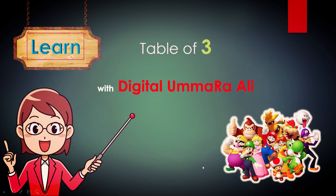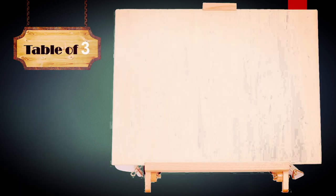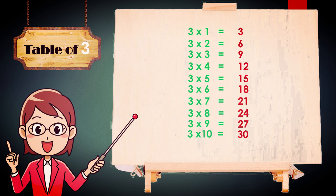Hey kids, welcome! Let's learn the table of three with digital Umar Ali. Three ones are three, three twos are six, three threes are nine, three fours are twelve, three fives are fifteen, three sixes are eighteen, three sevens are twenty-one, three eights are twenty-four, three nines are twenty-seven, three tens are thirty.